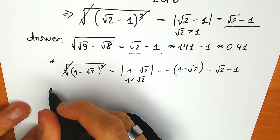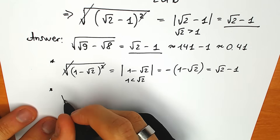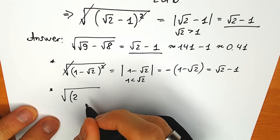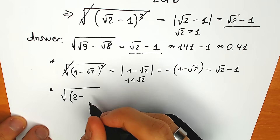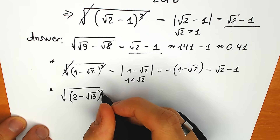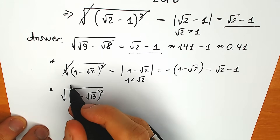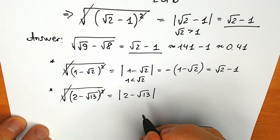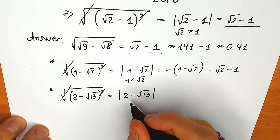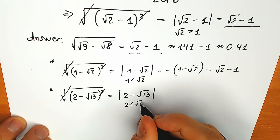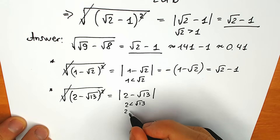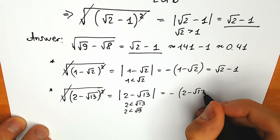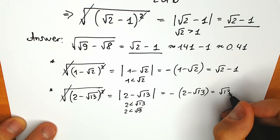One more example: if we have square root of (2 minus square root of 13) squared, we cancel and write the absolute value of 2 minus square root of 13. Is this expression positive or negative? It is negative, because 2 is less than square root of 13 — in fact, 2 is even less than square root of 9. So we have a negative sign, giving minus(2 minus square root of 13), and the result is square root of 13 minus 2.